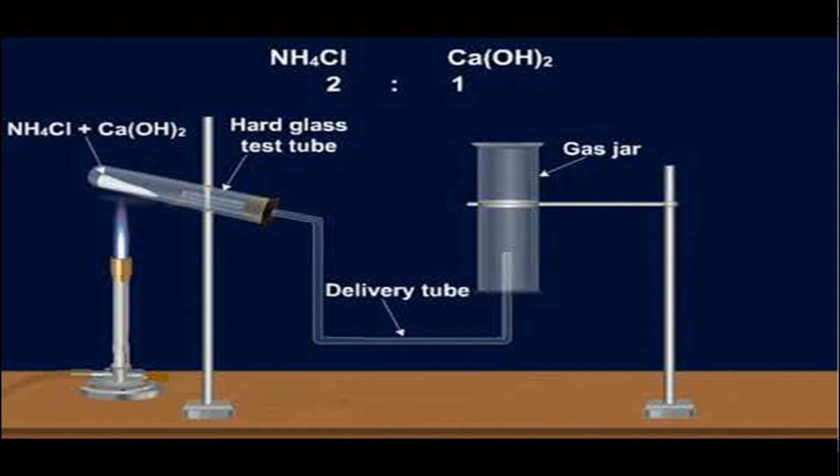The gas is collected in an inverted gas jar by downward displacement of air, because ammonia gas is lighter than air.